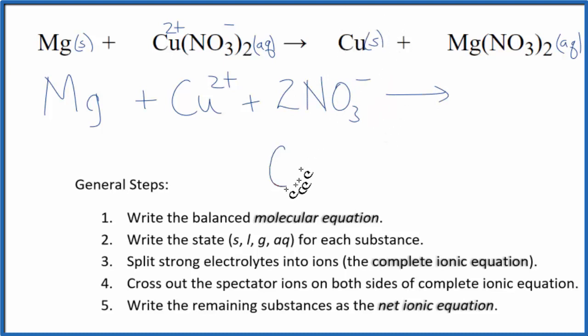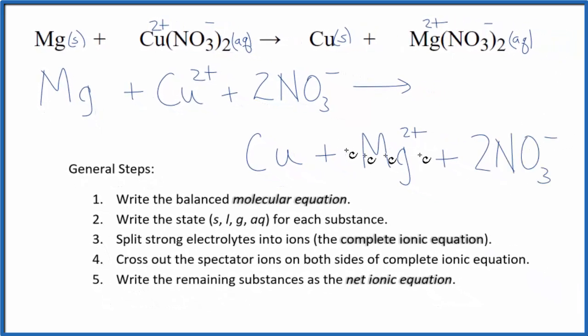For the products, we have copper, Cu, plus magnesium in group 2, 2 plus. We said the nitrate, always 1 minus. So we'll have magnesium 2 plus, the magnesium ion, plus we'll have two nitrate ions. This is the complete or total ionic equation.